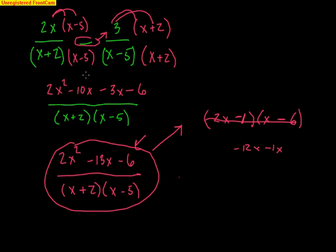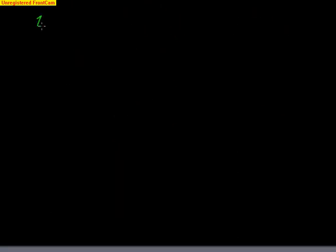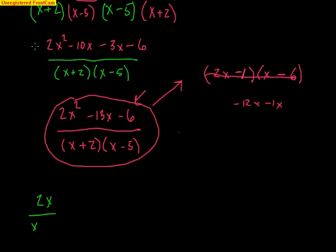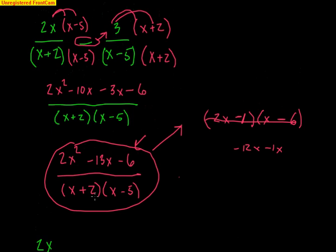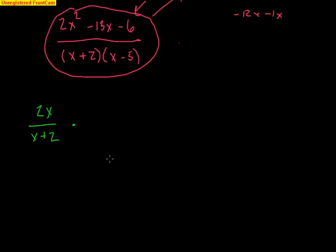Now let's take the same pair — the 2x over (x plus 2) and multiply it by 3 over (x minus 5). Now I'm going to teach you here: multiplying, the rules change a little bit. When you multiply fractions, you do not need a common denominator.